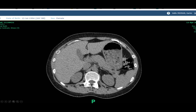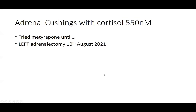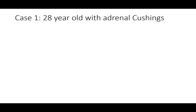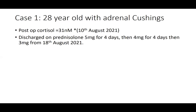The patient then has an adrenalectomy — before that, she's put on medical treatment while awaiting a surgical date. On the 10th of August, six months after diagnosis, she has an adrenalectomy. Her post-op cortisol was 31 nanomoles per litre — clearly insufficient for normal life. She's discharged on prednisolone: 5 for four days, then 4, then 3. Due to COVID, she wasn't seen again and stayed on prednisolone 3 for a whole year.